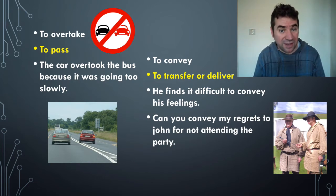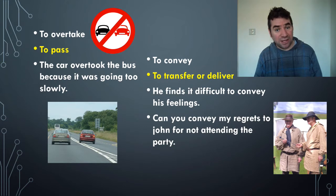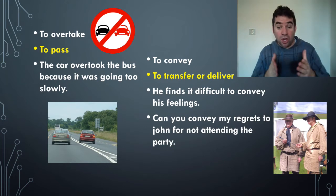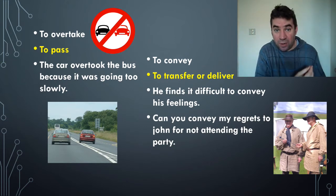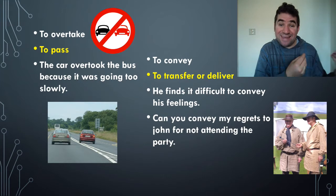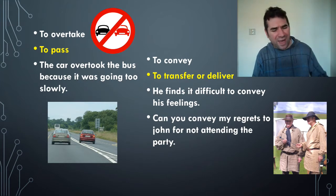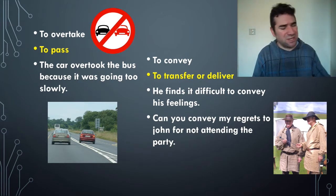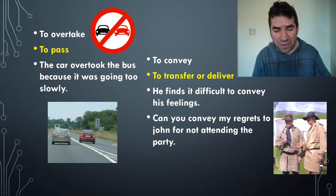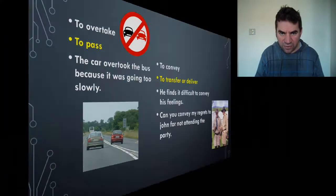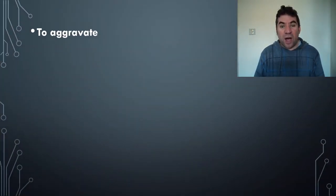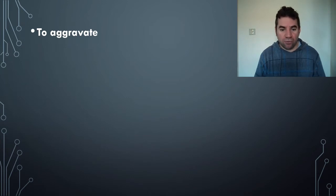You could also say: can you convey my regrets to John for not attending the party? In other words, you're sending a message with someone — so when they see John, they'll say, 'Oh, by the way, so-and-so says he's really sorry he can't come to the party.' This is conveying a message — carrying it with you.